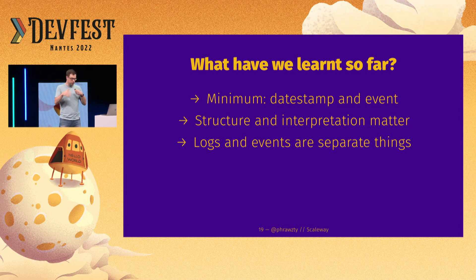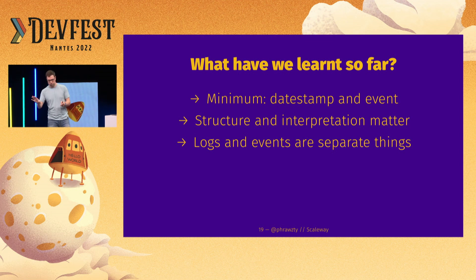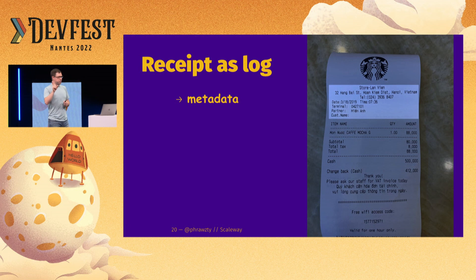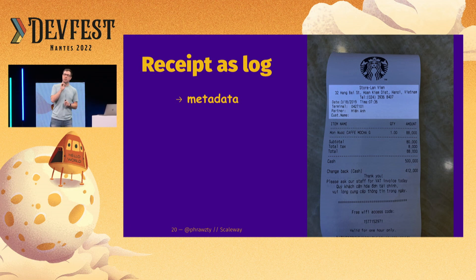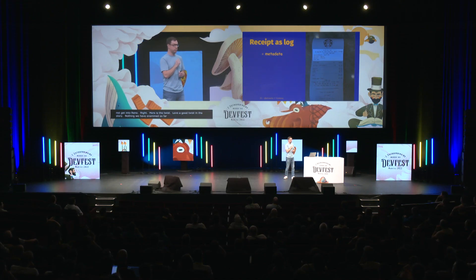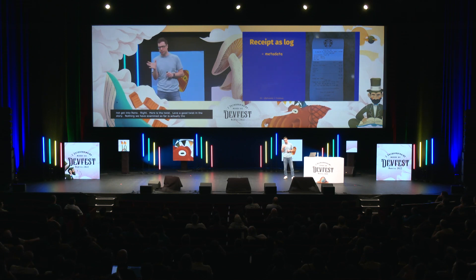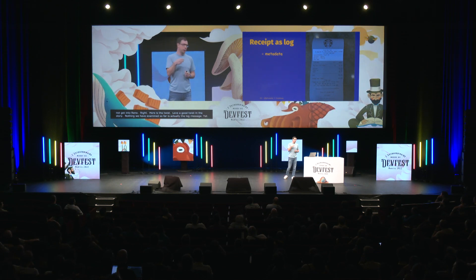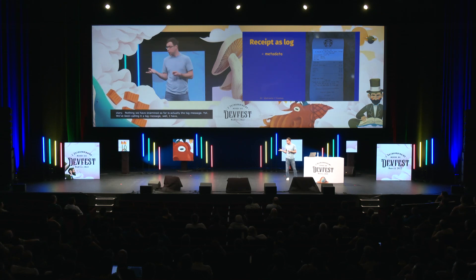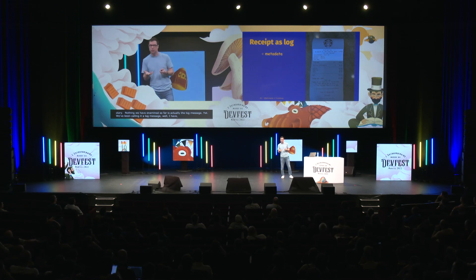Unless it is — the log message being emitted was itself an event, which presents a very dangerous recursion loop we're not going to get into right now. But here's the twist — nothing we've examined so far is actually the log message yet. We've been calling it a log message, on purpose. But we haven't even gotten to the message part yet. Which, of course, begs the question: what have we been looking at if we haven't been looking at a log message?